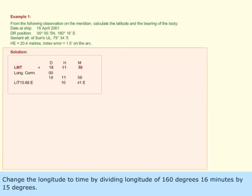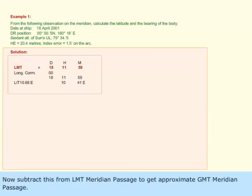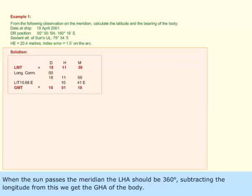Change the longitude to time by dividing the longitude 160 degrees 16 minutes by 15 degrees. We get 10 degrees 41 minutes and 4 seconds. Now subtract this from LMT meridian passage to get approximate GMT meridian passage.